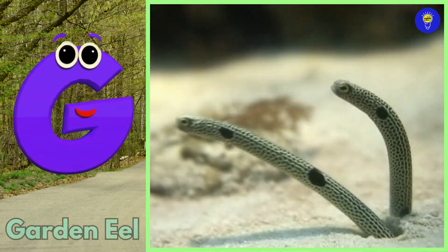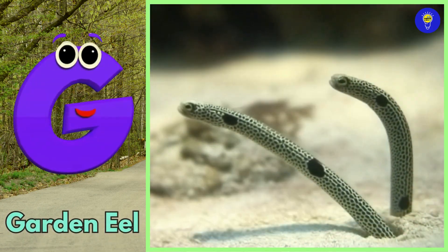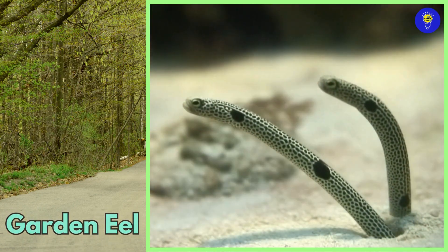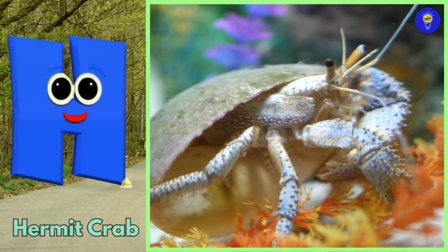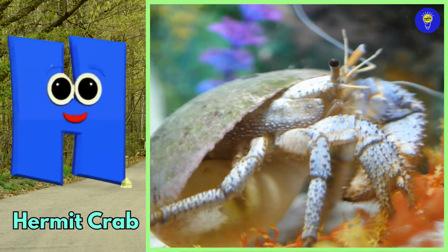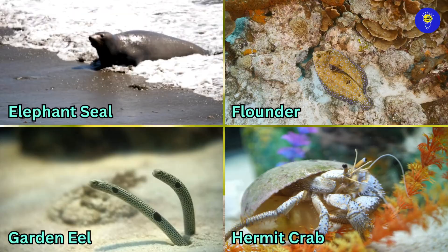G is for garden eel. H is for hermit crab.